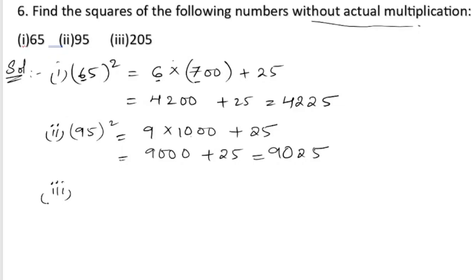Next, we will do the third one. In the third one we are having 205 whole square. Let us take the first two digits, which is 20. We need to multiply this 20 with 2100 plus 25.